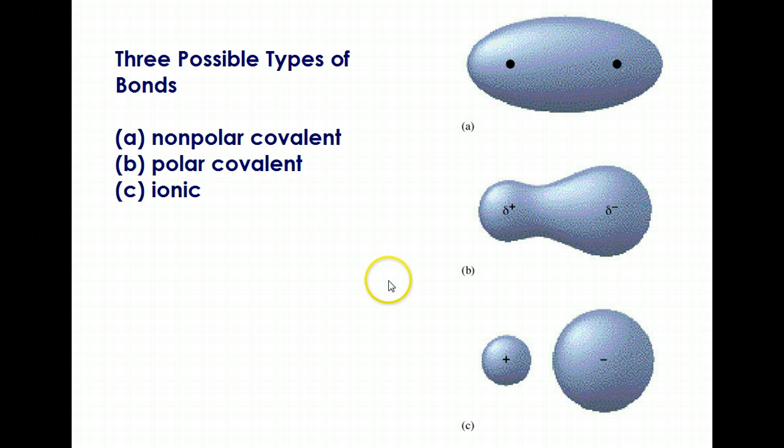Whereas in a polar covalent bond, it looks more like a sideways bowling pin, and depending on the electronegativity value differences between the elements forming that bond, the distribution will vary. That has to do with where the electrons are more likely to be found in that bond. With an ionic bond, we see the actual physical separation.